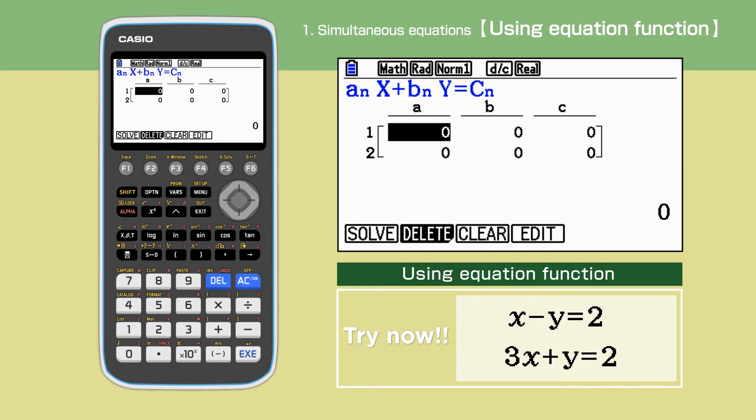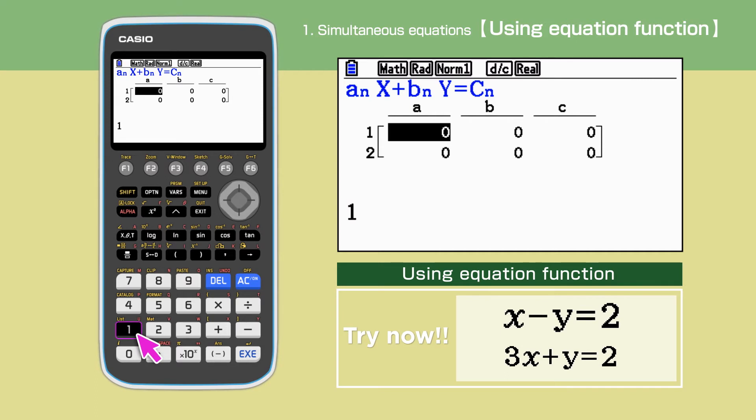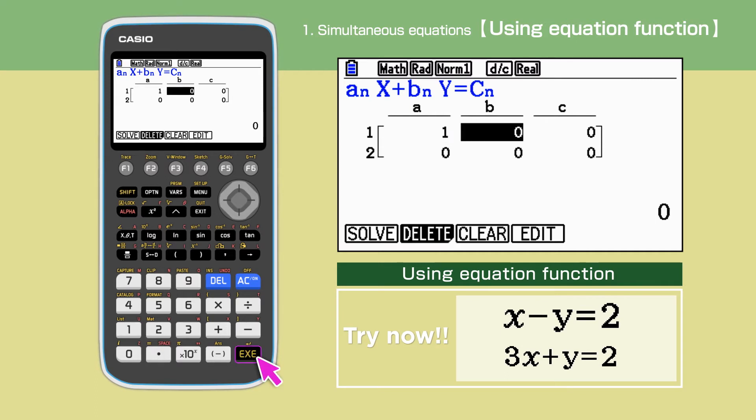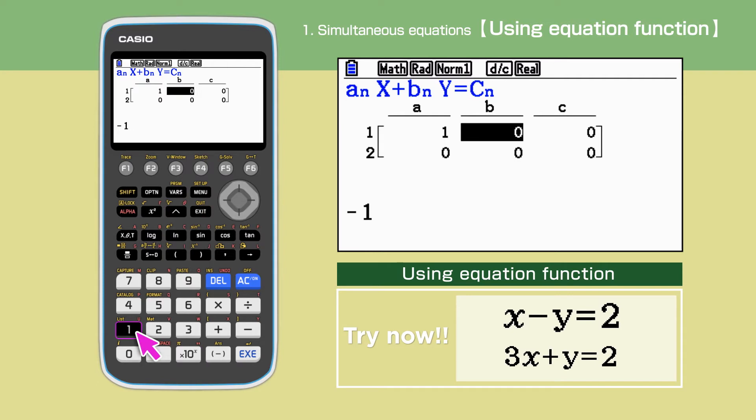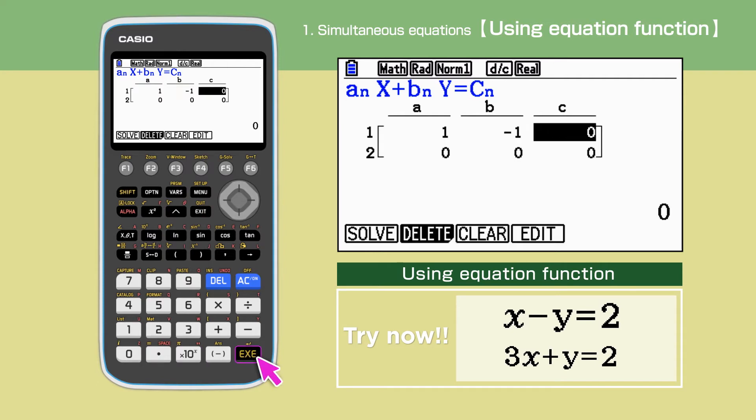If the equations are not in AX plus BY equals C form, then we will need to rearrange the equations. This is not the case for our example. Enter the coefficient of X, 1 in 1A, coefficient of Y, minus 1 in 1B, and then the constant 2 in 1C.